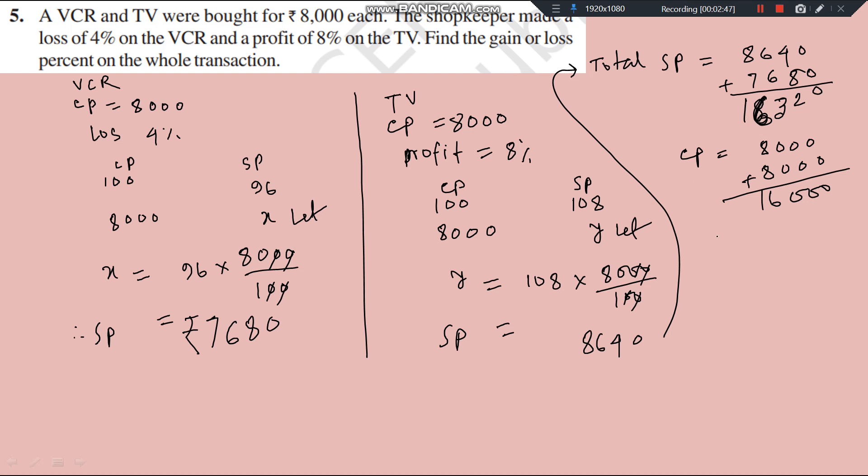So, SP is more than CP. SP is greater than CP. Therefore profit. So, profit equal to SP minus CP. SP is 8000, sorry, 16,320 and this is 16,000. So, if you subtract, it is 320 is the profit. Find the gain or loss percent on the whole.